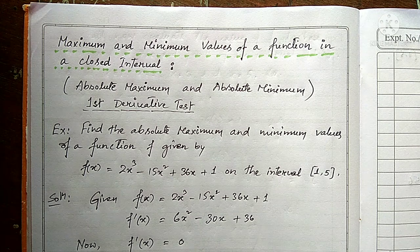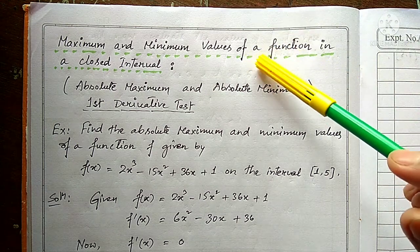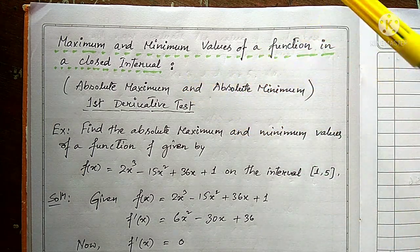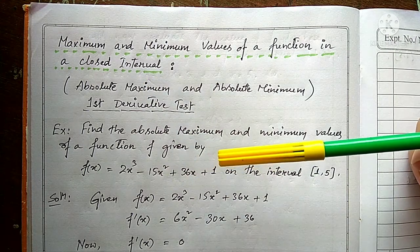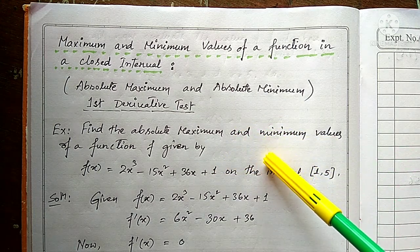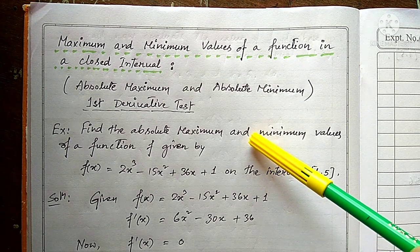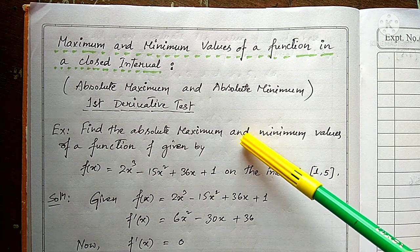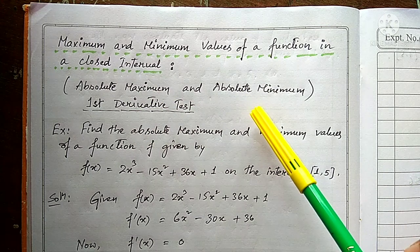Today we discuss the first type: absolute maximum and absolute minimum, which fall under the first derivative test. The headline is 'maximum and minimum values of a function in a closed interval.' When a function is given with a closed interval, we find the absolute maximum and absolute minimum using the first derivative test.